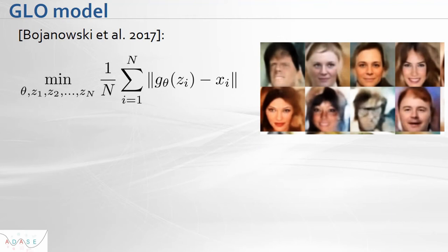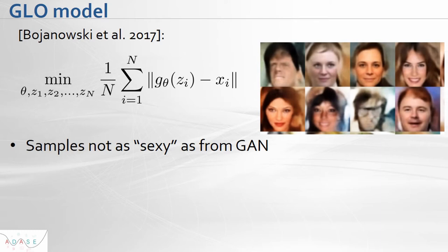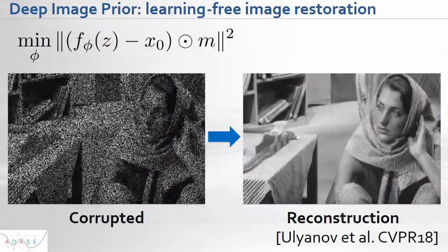For each image we estimate its latent vector by projecting that image onto the manifold defined by the generative model. We optimize with respect to all parameters — both parameters of the neural network realizing the generative model, and latent vectors corresponding to images from the training sample. The GLOW model generates samples that are not as sharp as GANs, but if we use it for image restoration we get more meaningful results. The question is how we can improve GLOW to get significantly sharper, high-resolution results like GANs while still maintaining nice latent vectors.